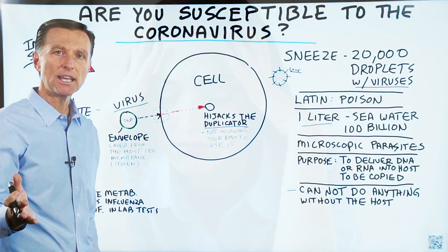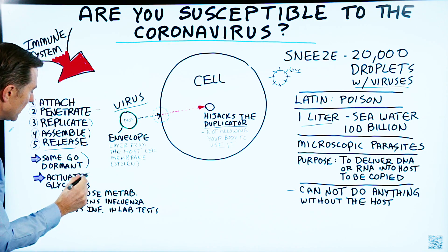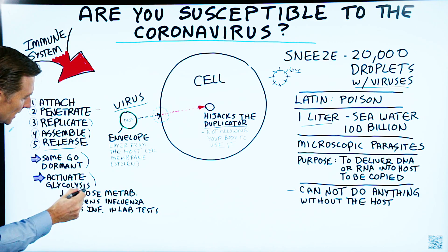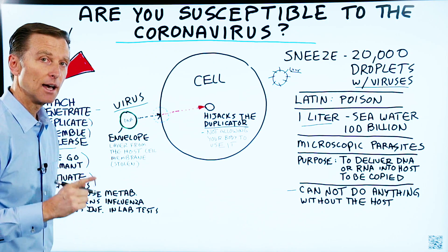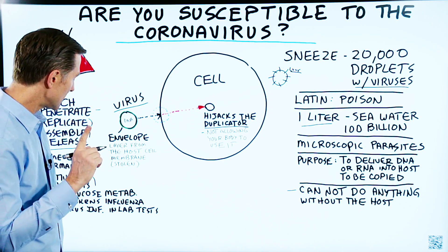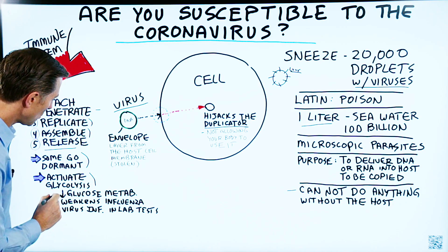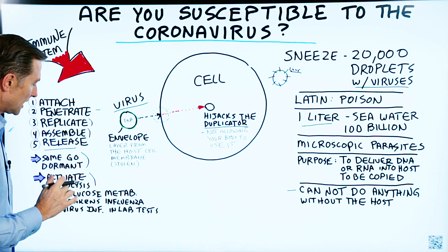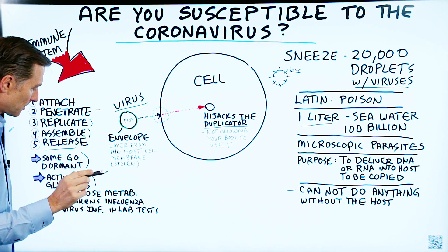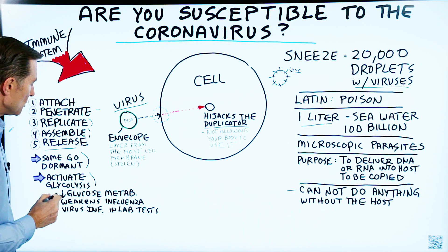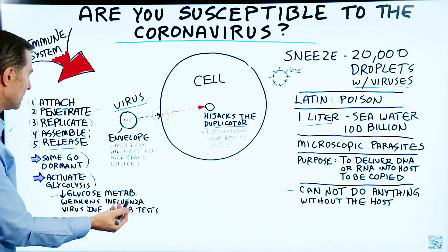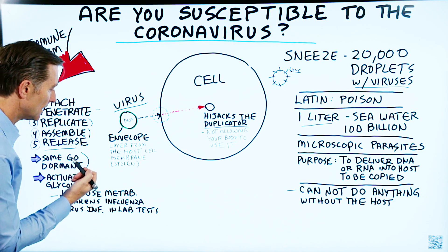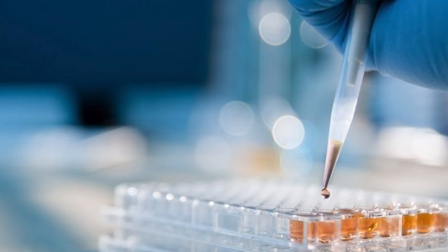Another interesting thing about certain viruses is they can activate glycolysis — the release of sugar. In a study linked below, when you decrease glucose metabolism, it actually weakens the influenza virus in laboratory tests. That's very interesting.